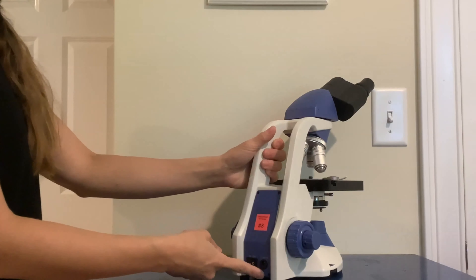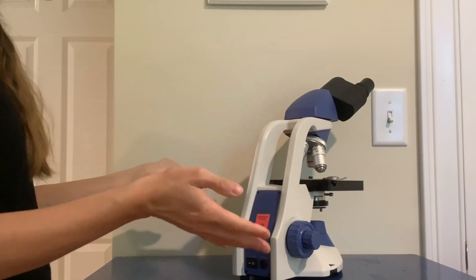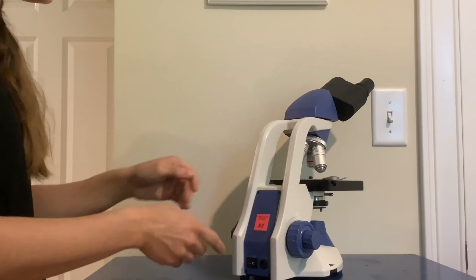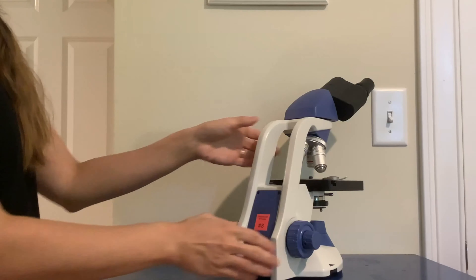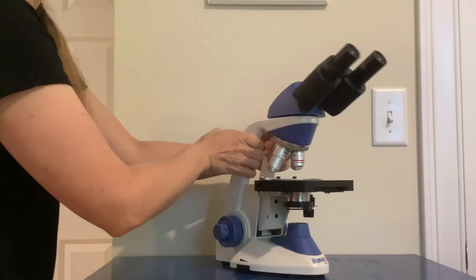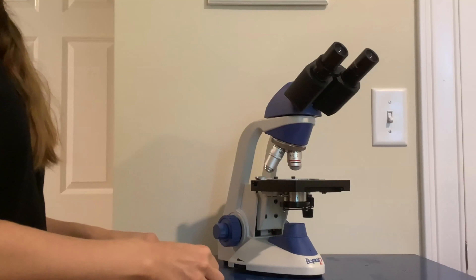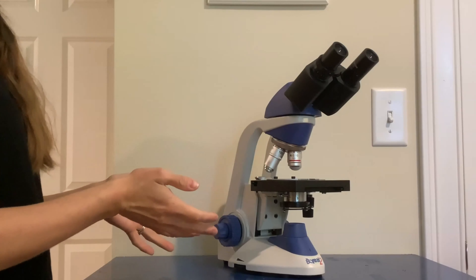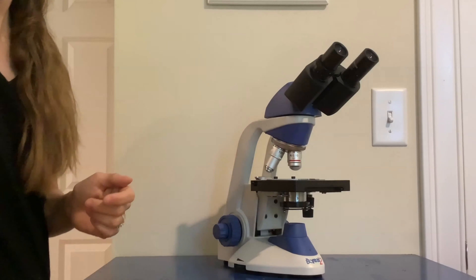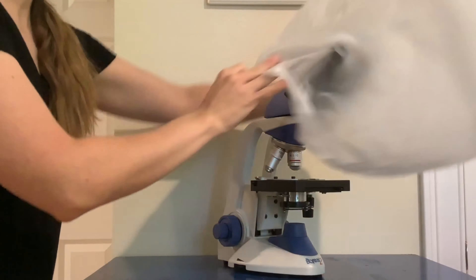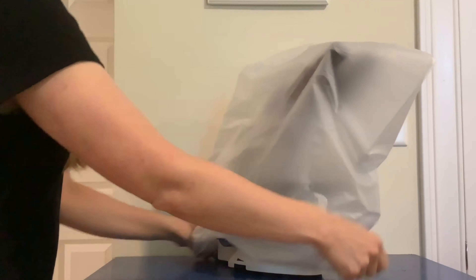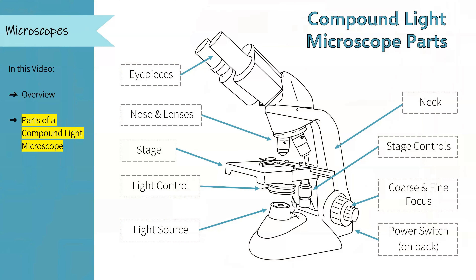Finally, on the back we have where our plug plugs in and a power switch — so if you come up to a microscope and the light is not on, the first thing to check is your power switch. When putting our microscope away, be sure to store it with no slide on the stage, the 4x objective lens ready to go, and gently put the dust cover back on. That's it for today — if you have any questions please leave them in the comments below.